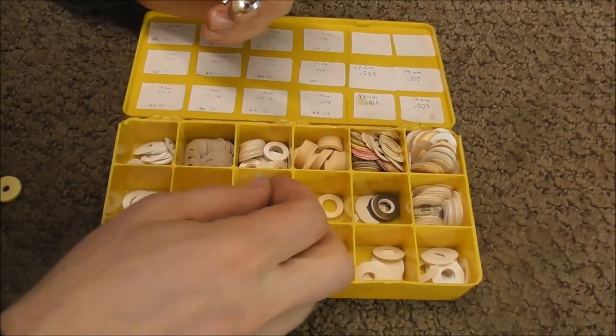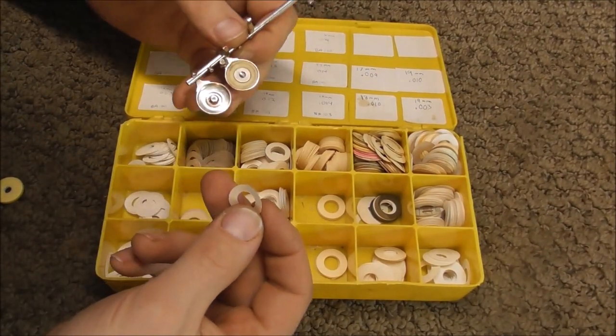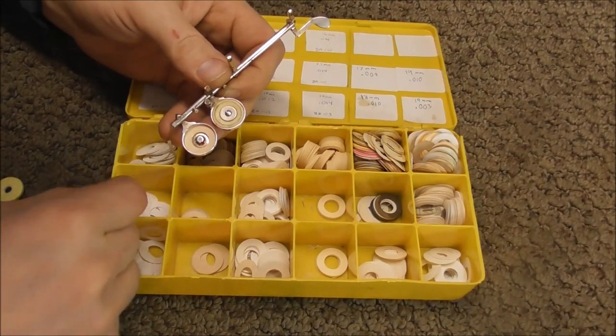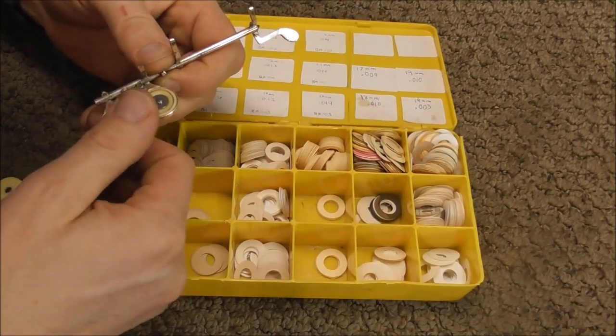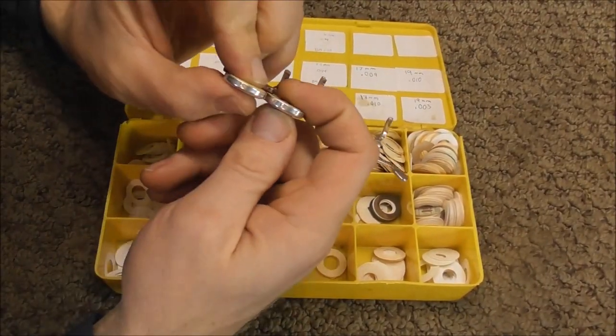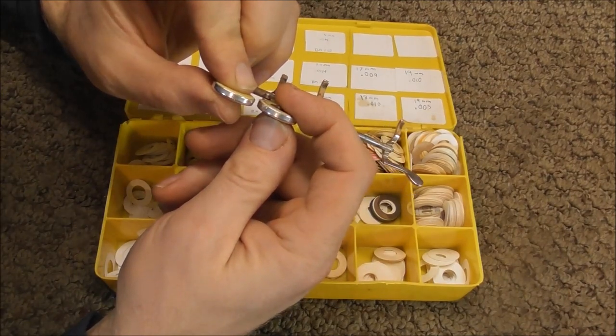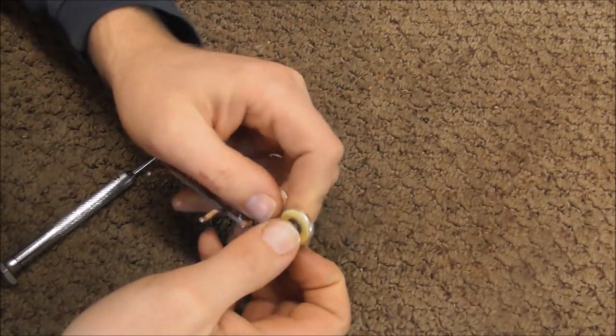I'll take out the 12 thousandths. And this is a 6 thousandths. And you can stack these. So I'm going to stack a 6 and a 3 together to get 9 thousandths. And I'll put the pad in. And that looks good, so I'm going to use that. Put the screw inside the washer and screw that on.